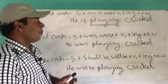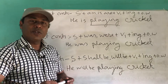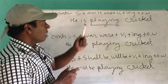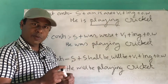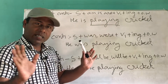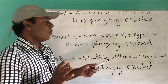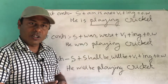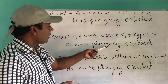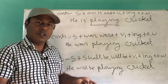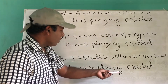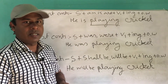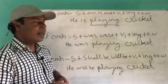So for any kind of continuous tense, when we see a present participle word, it is a continuous tense. If the present participle word comes after am/is/are, it is the present continuous tense. If it comes after was/were, it is the past continuous tense. If it comes after shall be/will be, it is the future continuous tense.